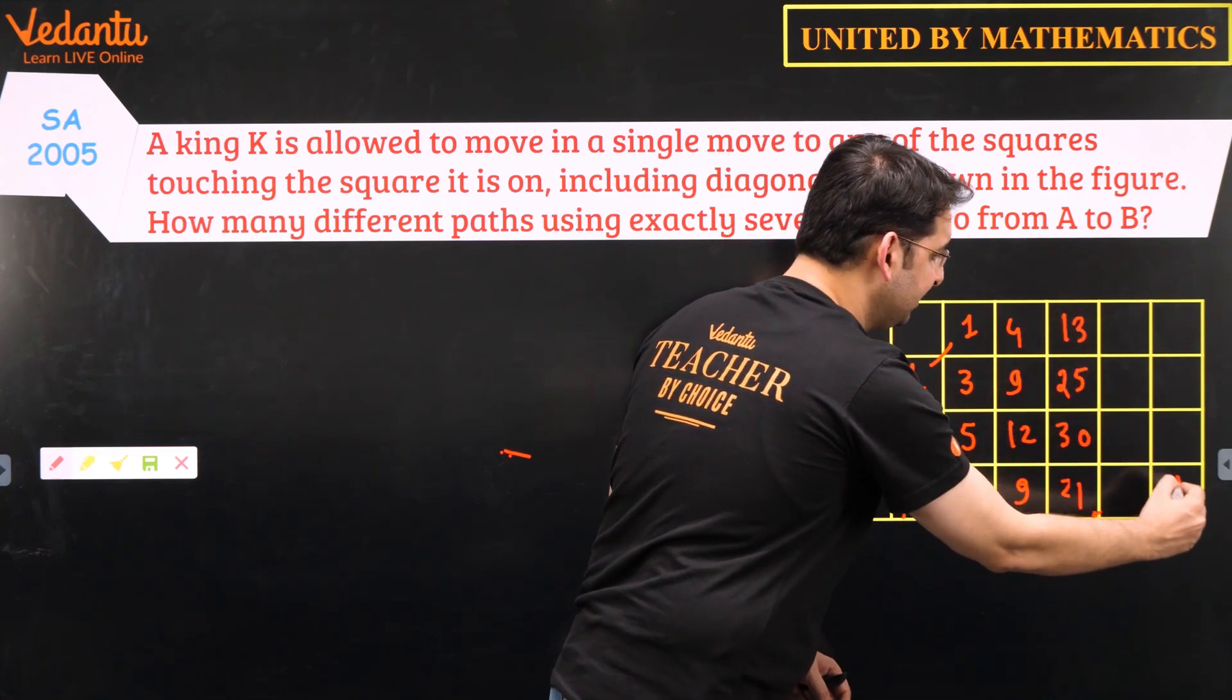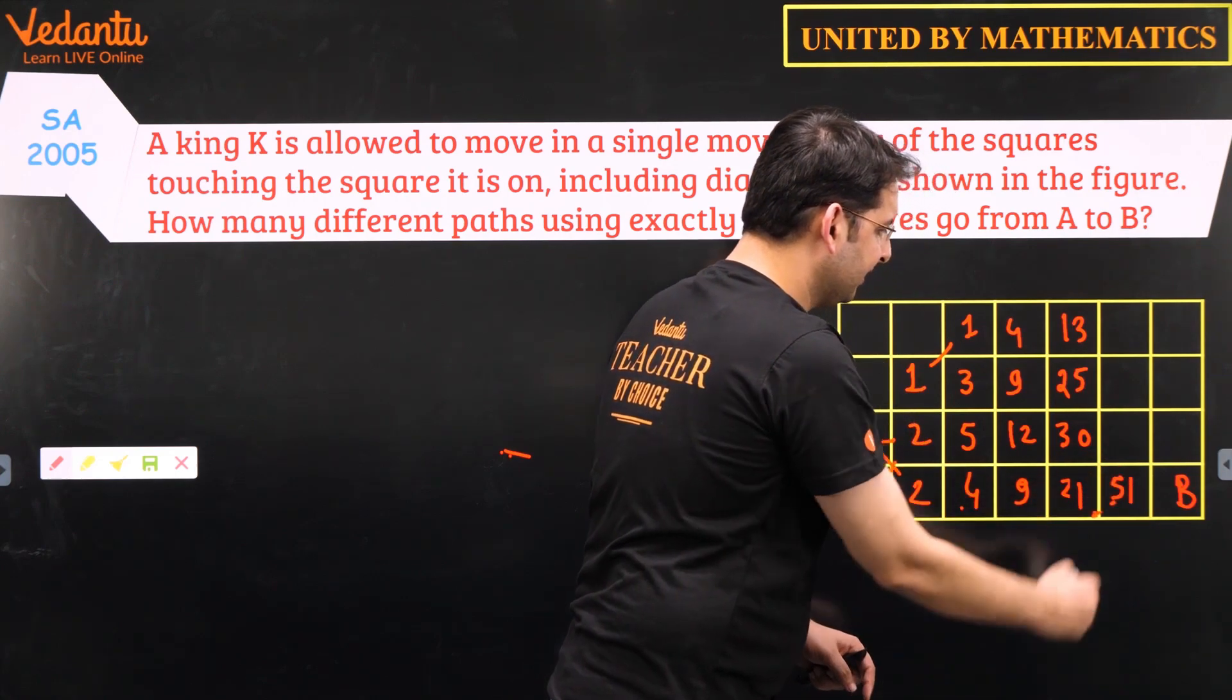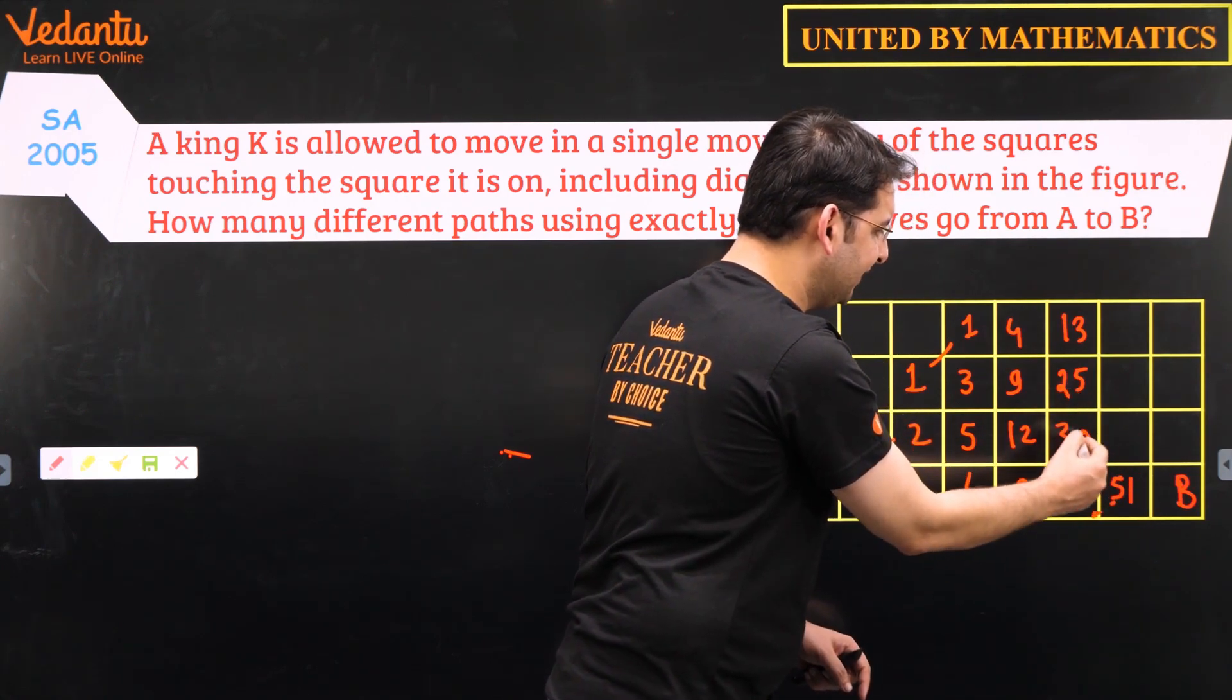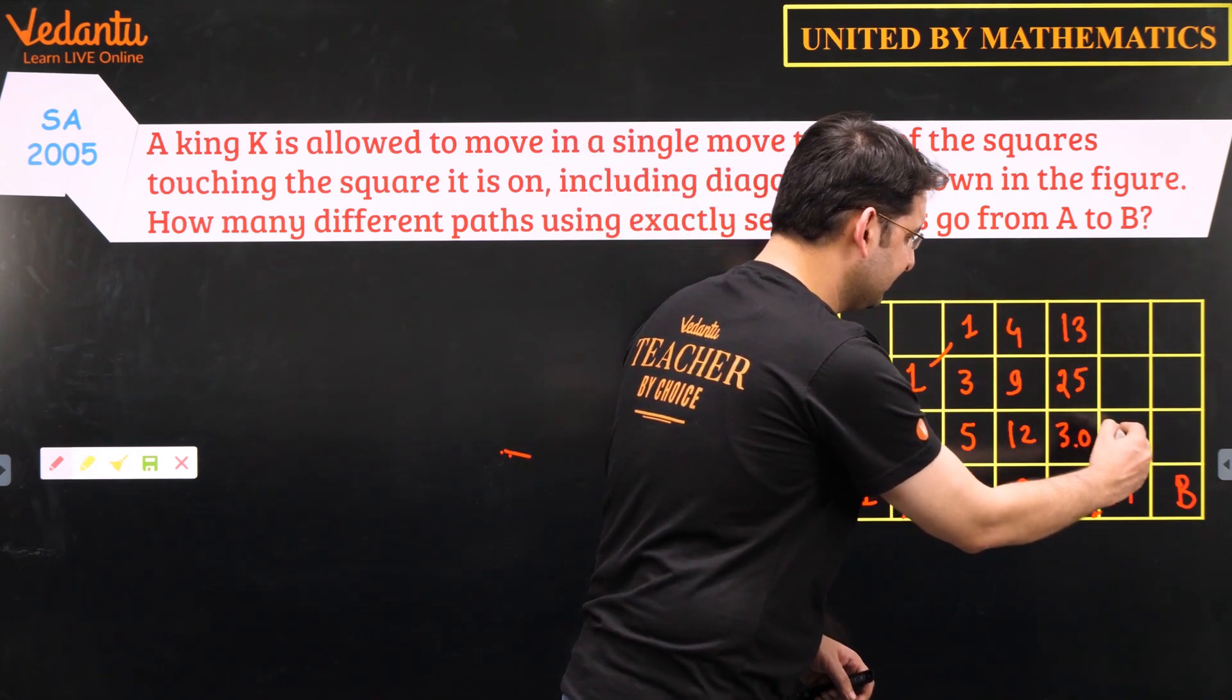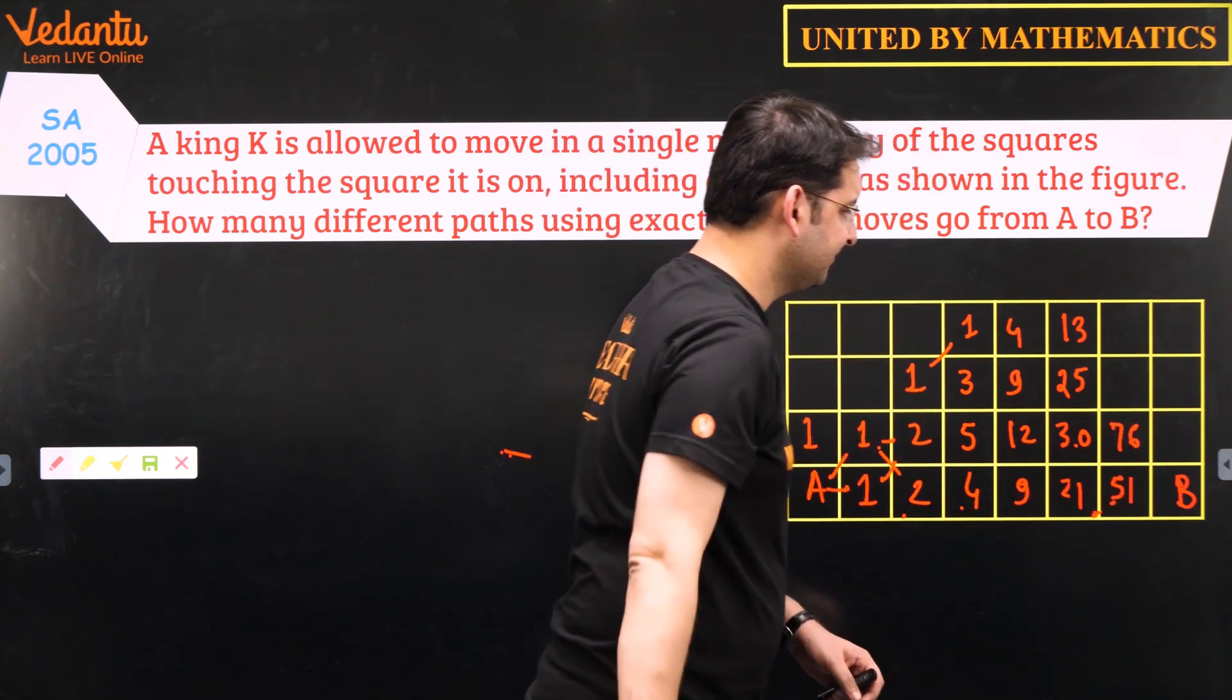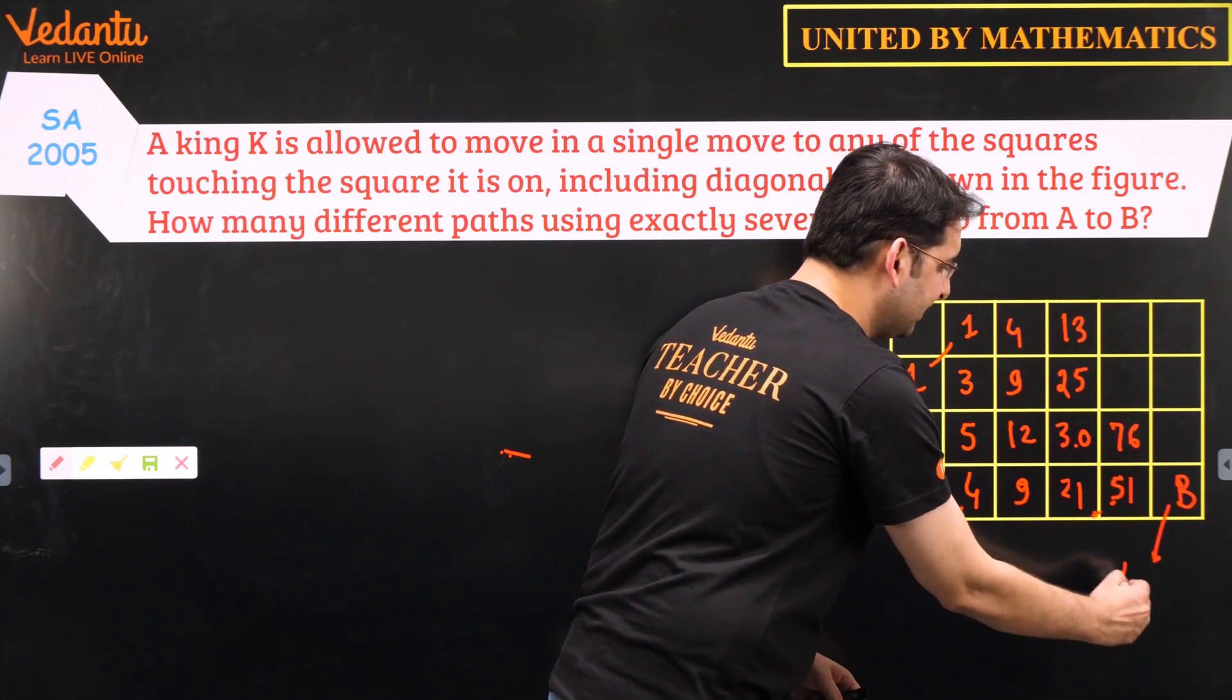So this is B. For this number it will be 51. And for this it will be addition of 25 plus 30 which is 55 plus 21. It is 76. And this is the addition of 76 and 51 which is 127.